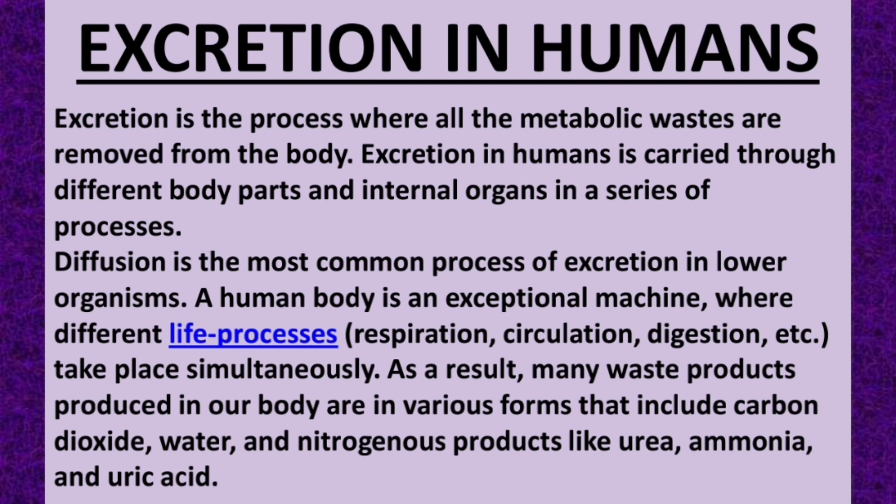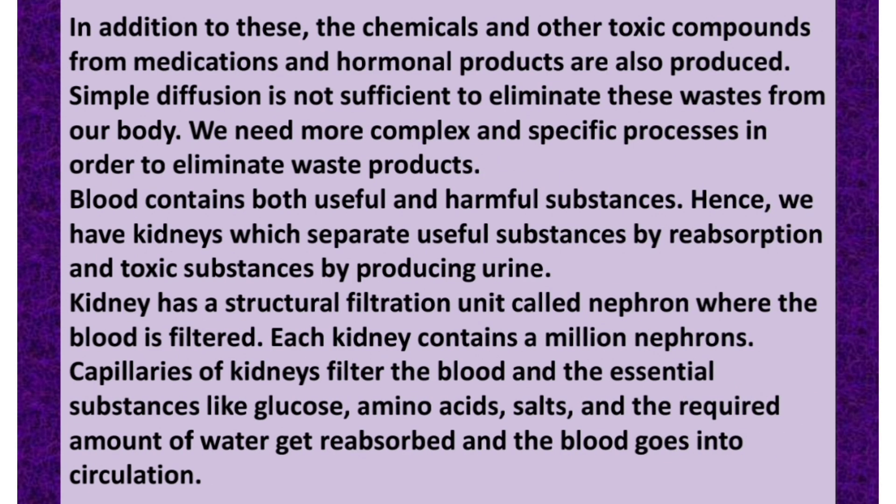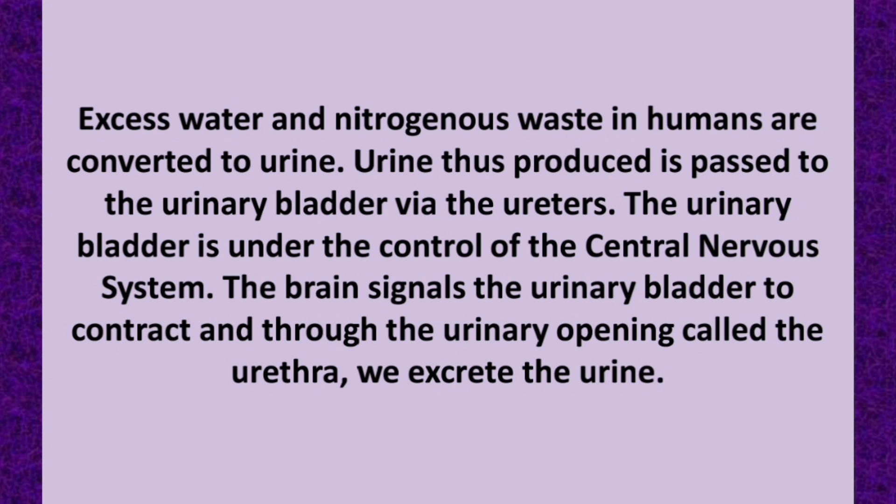In addition to these, chemical and toxin compounds from medications and hormonal products are also produced. Simple diffusion is not sufficient to eliminate these wastes, so we need more complex and specific processes. Blood contains both useful and harmful substances; the kidneys separate useful substances by reabsorption and remove toxic substances by producing urine. The structural filtration unit is called the nephron. The kidneys filter the blood and essential substances like glucose, amino acids, salts, and the required amount of water get reabsorbed into the bloodstream.